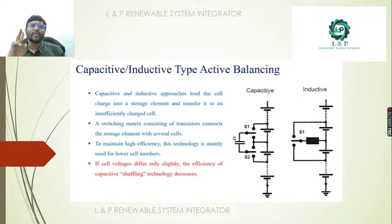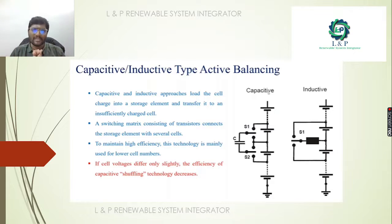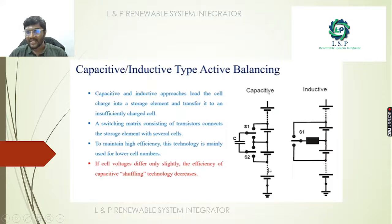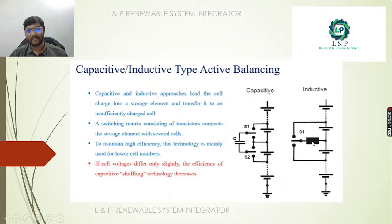In active balancing we are using two approaches: one is capacitive-type active management and the other is inductive-type active management. Here, capacitors are connected through switches across the battery terminals, whereas in the inductive type, an inductive element is connected across the individual battery cells through switches.